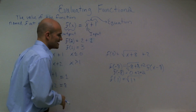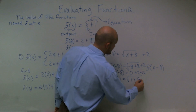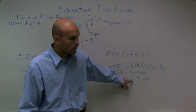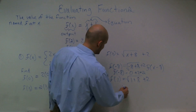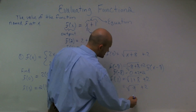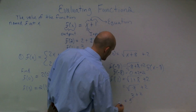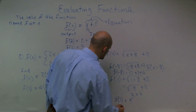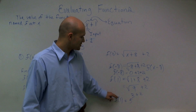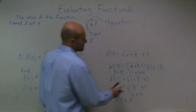For f of 1, my new input value is 1. So I have f of 1 equals the square root of 1 plus 8, plus 2. Well, 1 plus 8 gives me 9, then plus 2. The square root of 9 is 3, plus 2 equals 5. So the value of my function f at 1 is equal to 5.